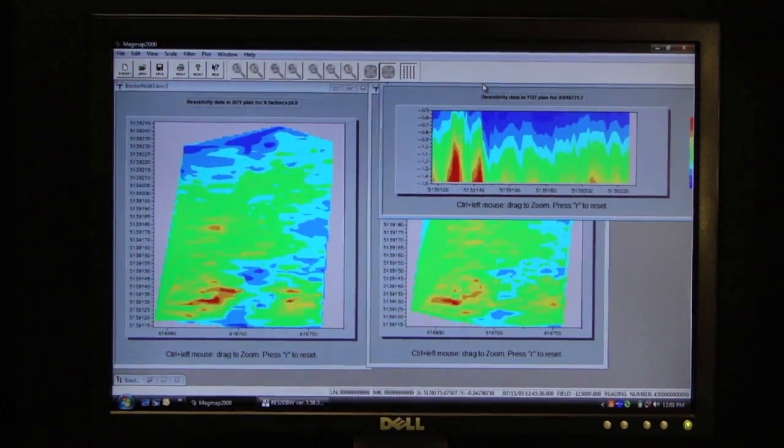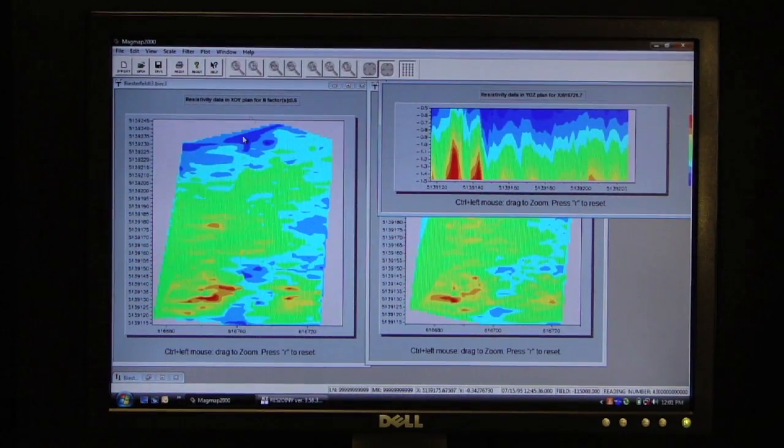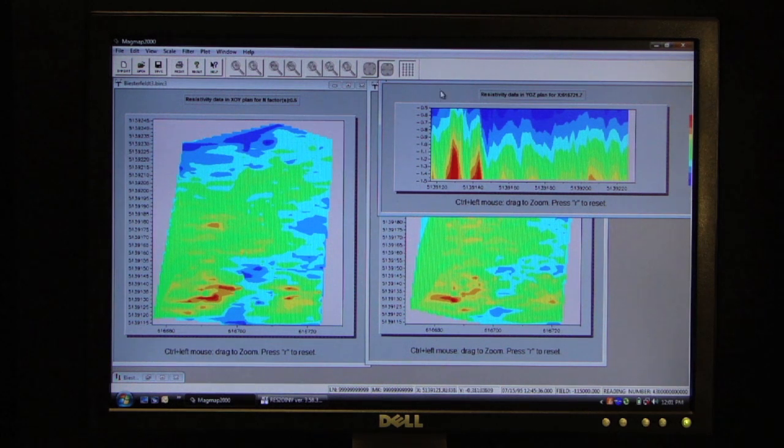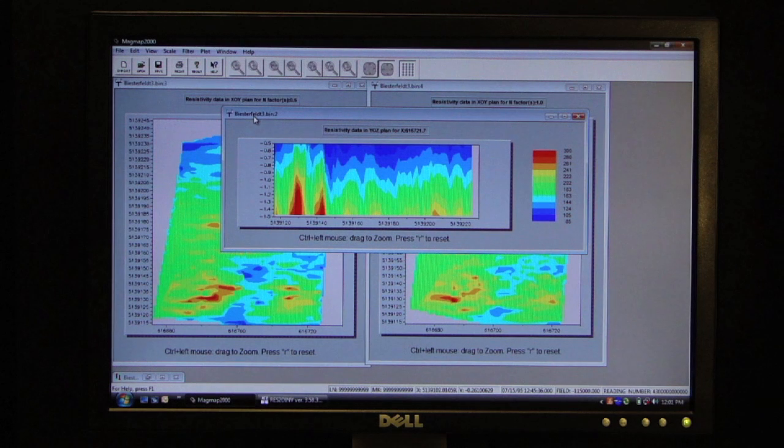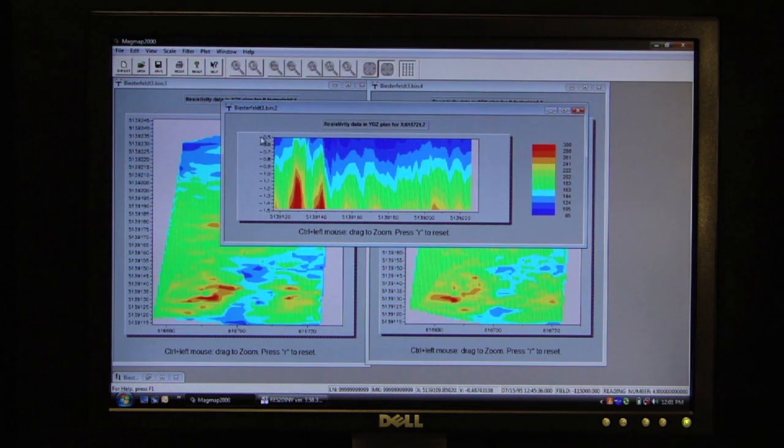Okay, so you can see that we have horizontal plan view maps, and we've got vertical depth sections. The next step is to invert this depth section to a true depth and a true resistivity.